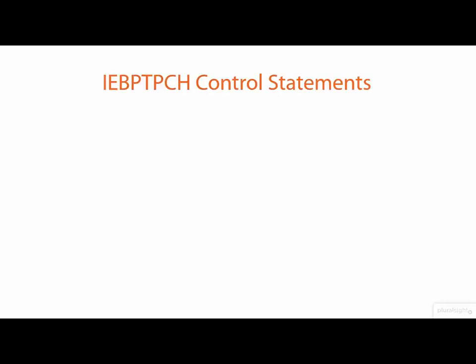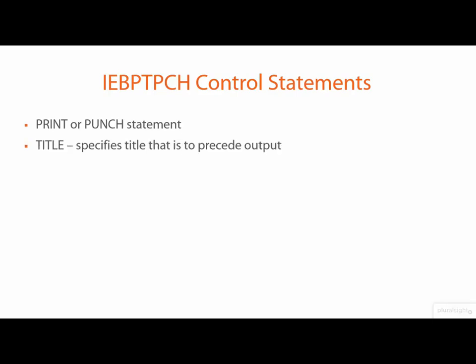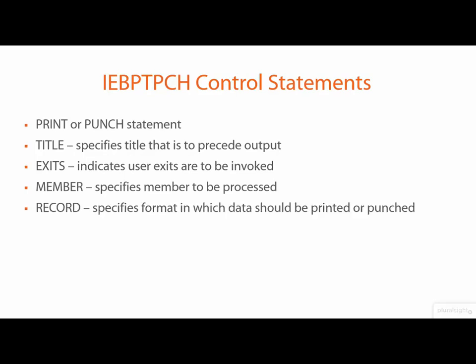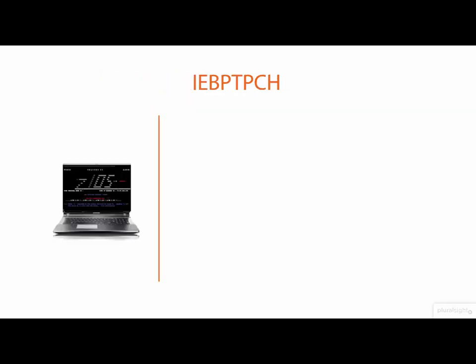The control statements we're going to be looking at are the PRINT or PUNCH statement. We can specify a title if we want to include that in our output. We can indicate whether there are exits that are going to be invoked, which would be user-written programs. We can specify individual members that we want to process, individual record formats that are going to be printed or punched, and also indicate whether labels for tapes should be processed as data.